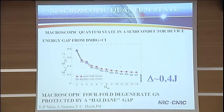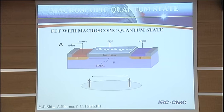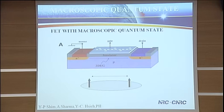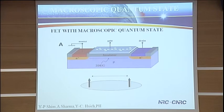This means we have generated a macroscopic quantum state protected by a Haldane gap. This ground state is fourfold degenerate, so effectively what we have done is created two effective spin-1/2 particles correlated over macroscopic distance. We have converted this field-effect transistor into a macroscopic quantum state, which can be thought of as two spin-1/2 particles at the ends. Now you can take this and start building quantum circuits which you can see with a magnifying glass — you don't need a nanofab.